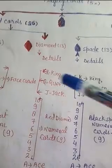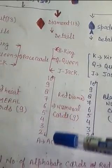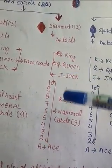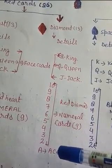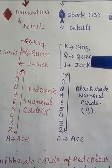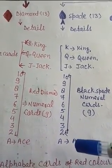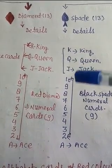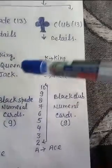Similarly in diamonds, there are 3 face cards, alphabet cards like Ace, and total number of alphabet cards is 4, with 9 numeral cards. In spades, there are 3 face cards, alphabet cards like Ace, total number of alphabet cards is 4, and 9 black cards.